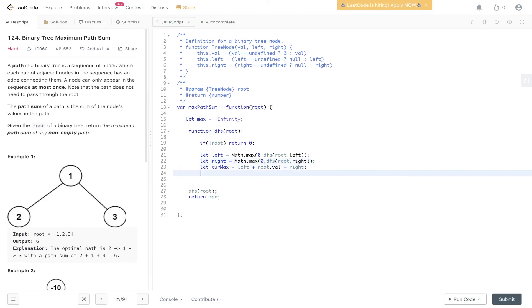Then we can update the max, so max equals maximum between current max and max. And finally what we need to return up the tree is root.val plus the maximum between left and right. Okay, let's give that a go.